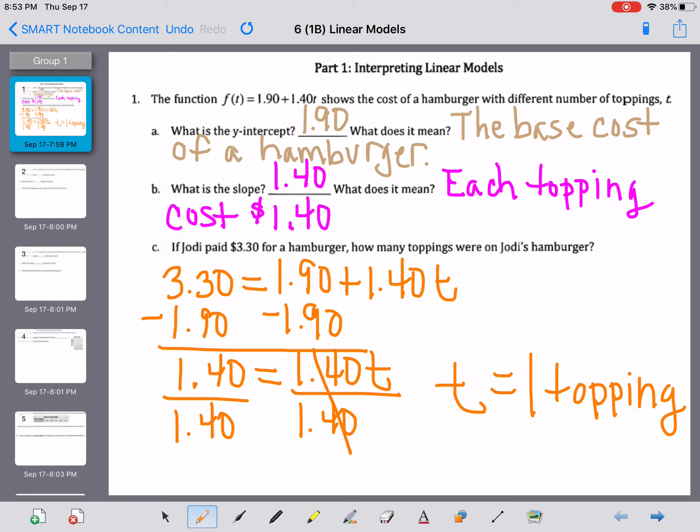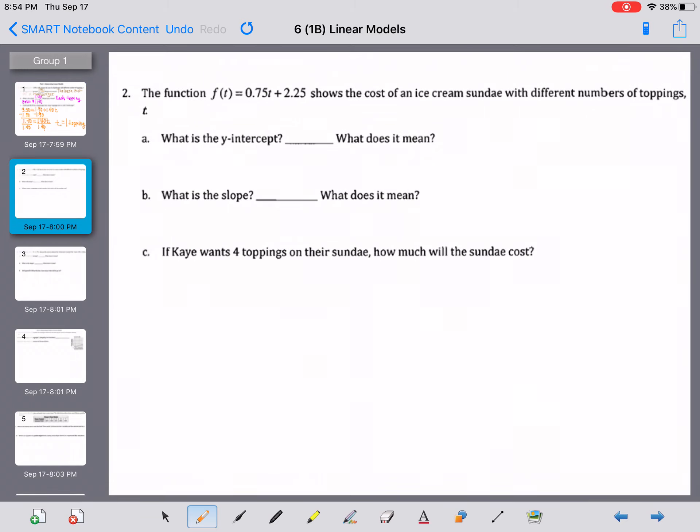Now, what I can recommend here, even though I'm going to go ahead and do this next example, is it's very similar to this one. Why don't you pause the video and see if you can do example two on your own? We've got the function f(t) = 0.75t + 2.25. It shows the cost of an ice cream sundae with different numbers of toppings, t.